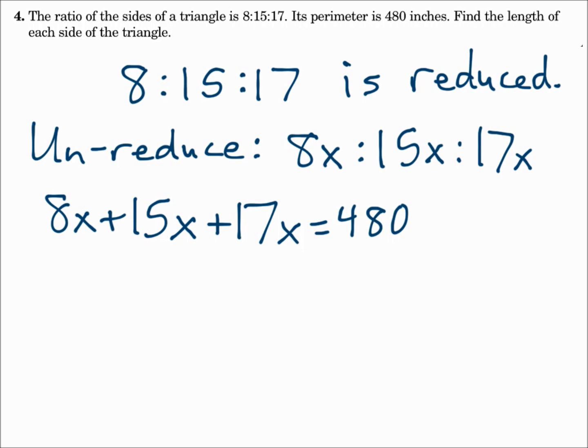And again, we got that by un-reducing the ratio. Un-reducing it takes it back to the original value. We solve that for x. Combine like terms and you get 40x equals 480. Divide by 40 and x equals 12.